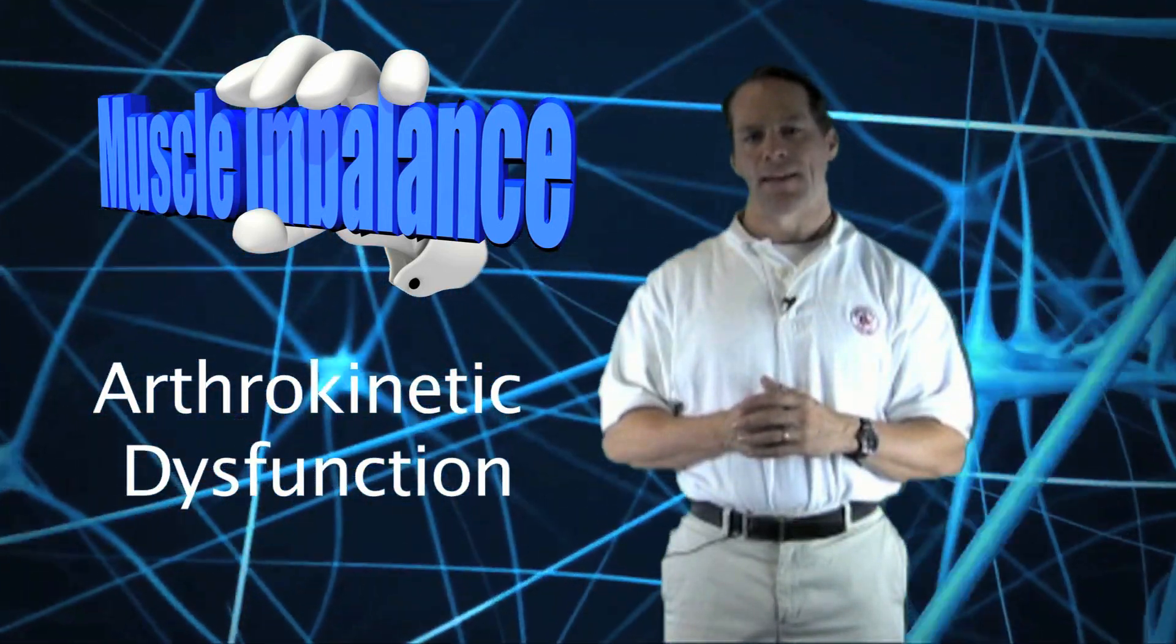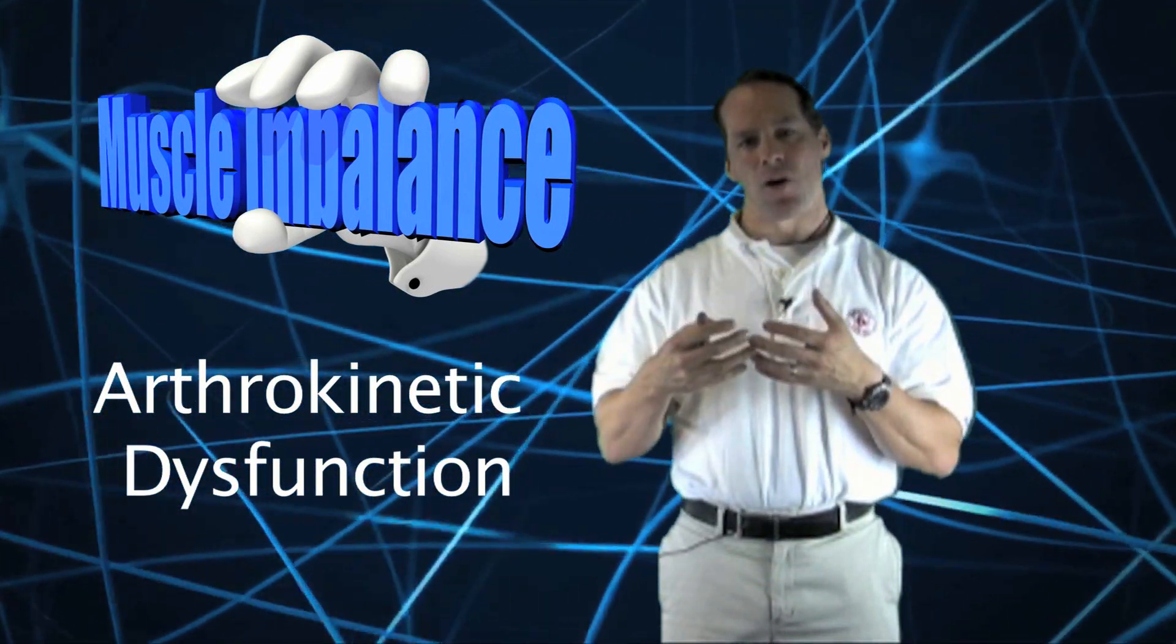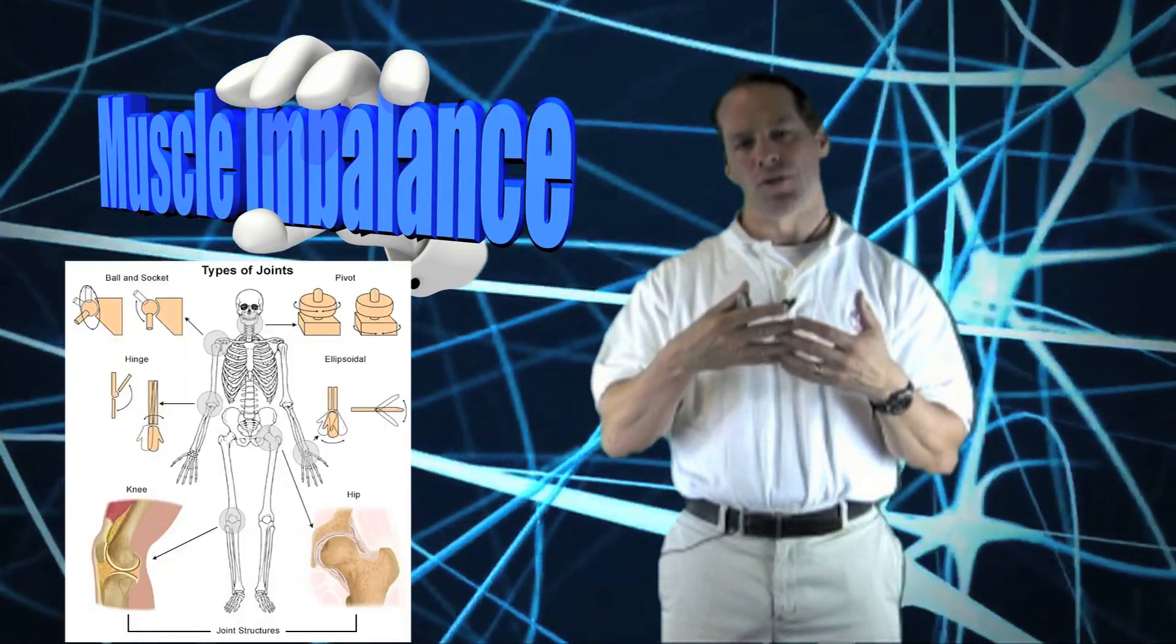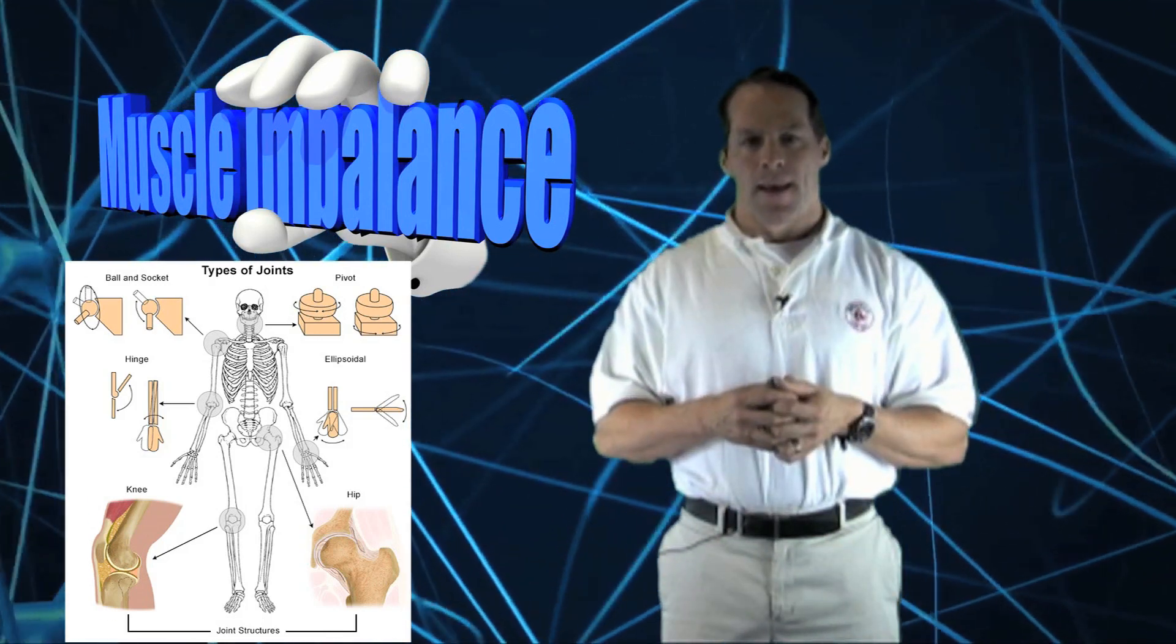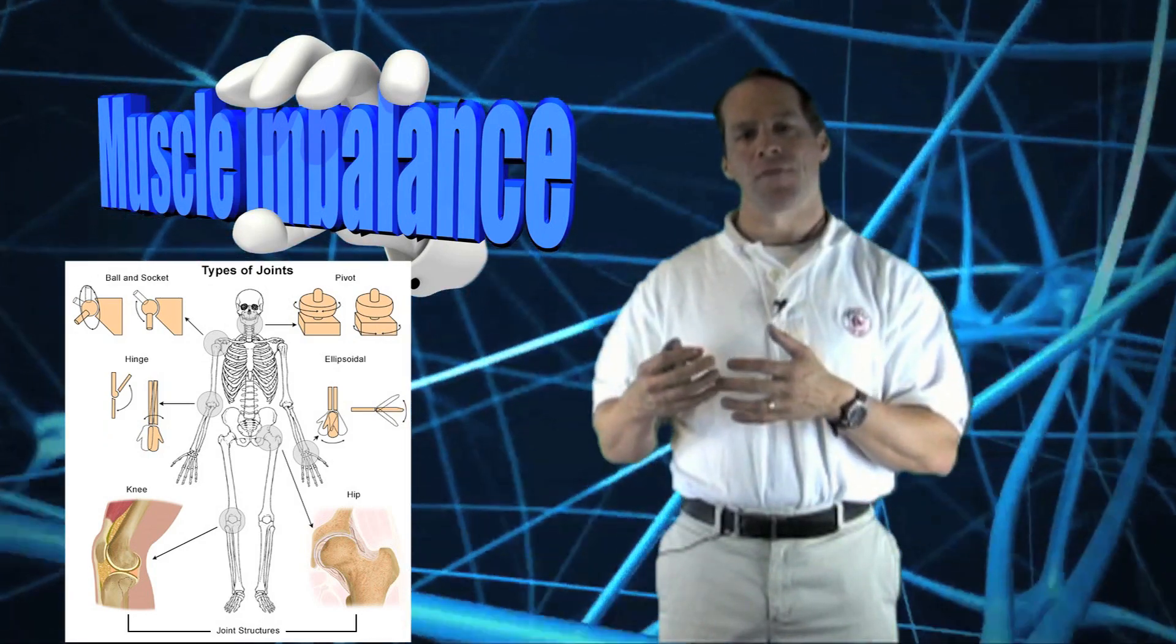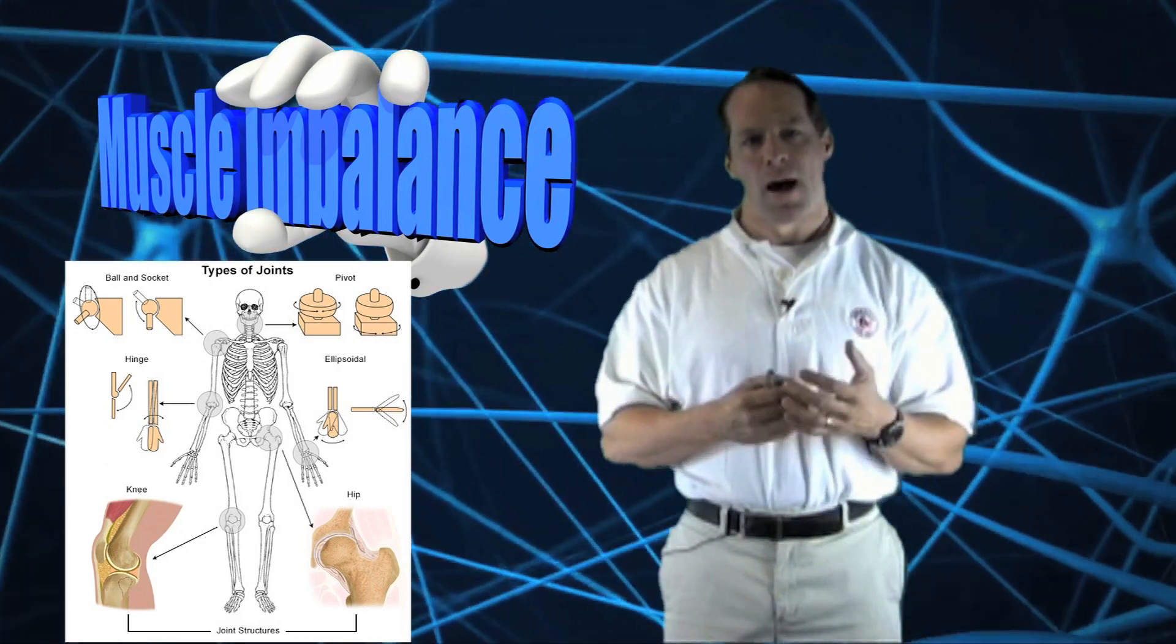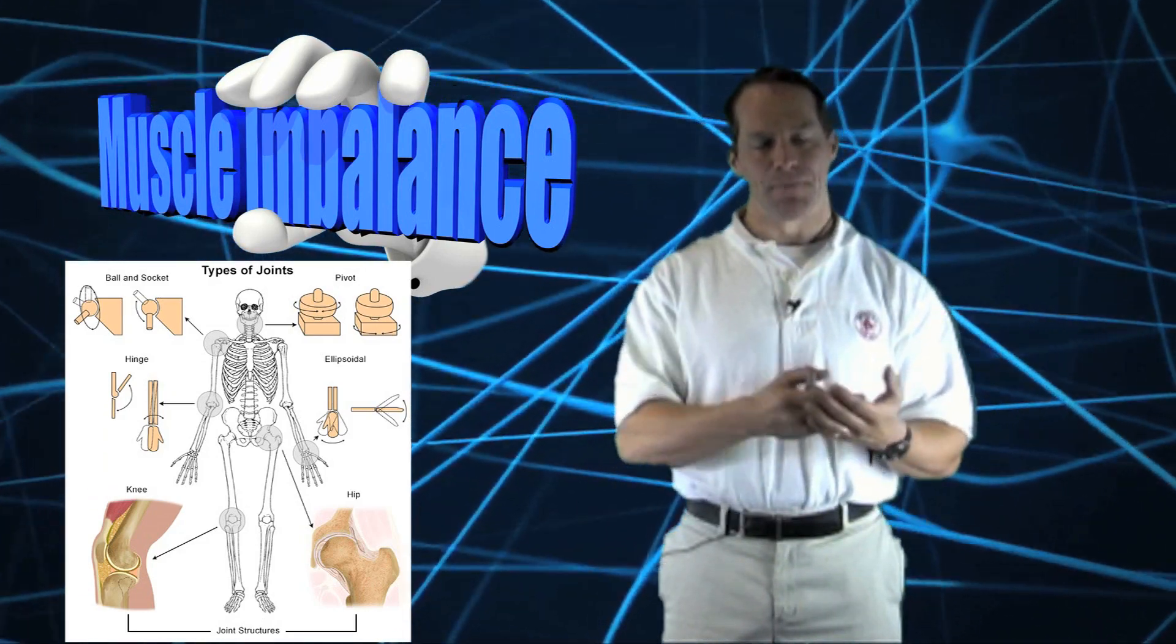Arthrokinetic dysfunction is a biomechanical dysfunction in two articulated partners resulting in abnormal joint movement and poor proprioception. If the joints are not functioning through a fluid movement pattern, this will throw off the normal contraction cycle of the supporting muscles, causing imbalance and instability issues.